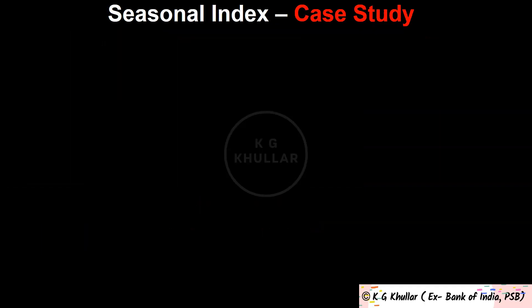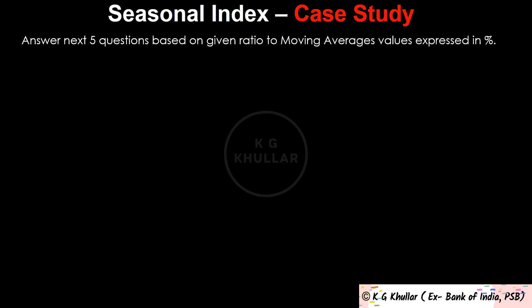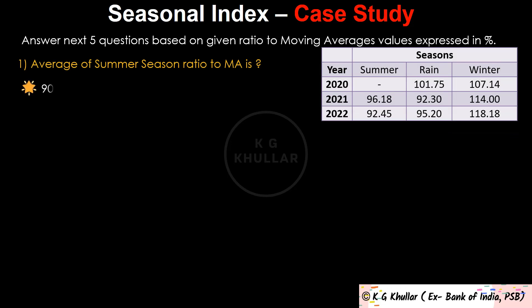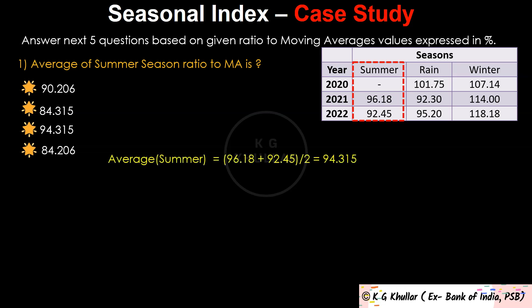Let's do a case study that will show how IFBF will present the concept of seasonal index in the examination. Answer the next 5 questions based on given ratio to moving average values expressed in percentage. The first question is: average of summer season ratio to moving averages. For summer season, the data given is 96.18 and 92.45, so the average will be 96.18 plus 92.45 divided by 2, which equals 94.315. We divide by 2 because only 2 values are given for summer season. The correct option is option A.